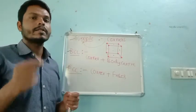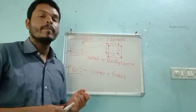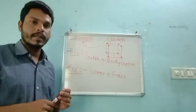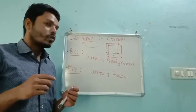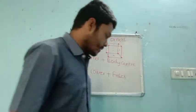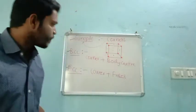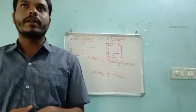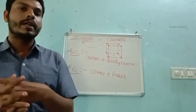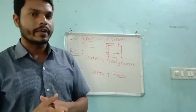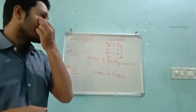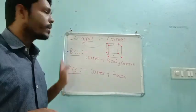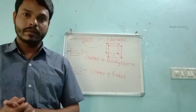These are the three different types of unit cells. Today's class is an introductory class. Remember: Simple — particles only at corners; BCC — corners plus body center; FCC/HCP/CCP — corners plus faces. In the next class we will discuss the further parts of this topic. Thank you.